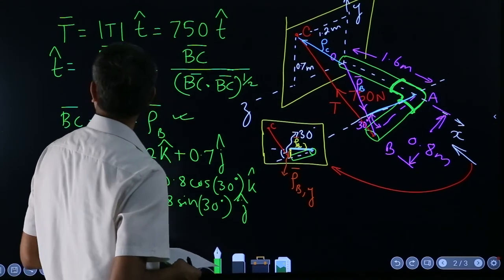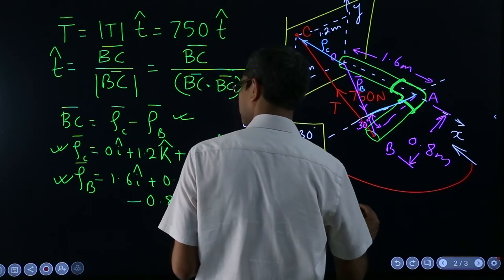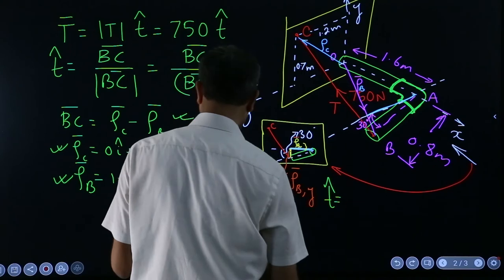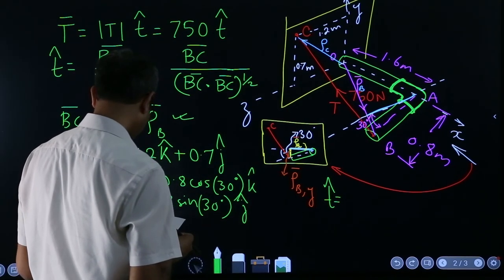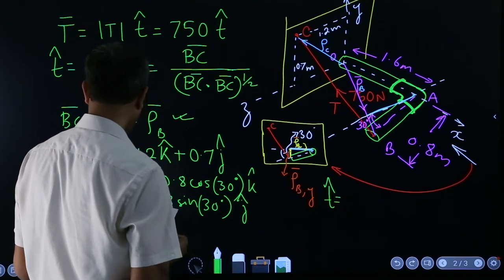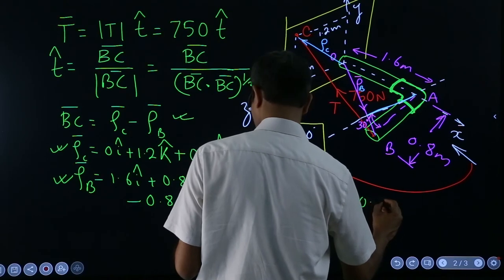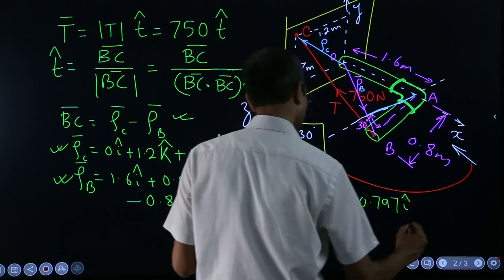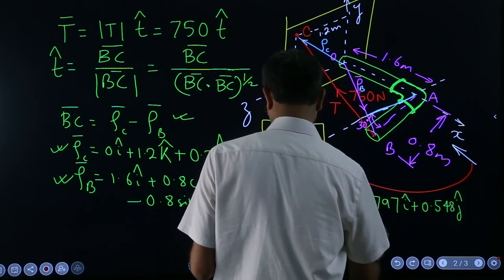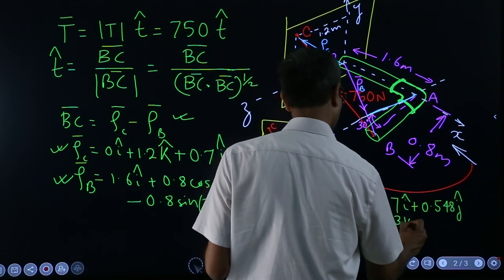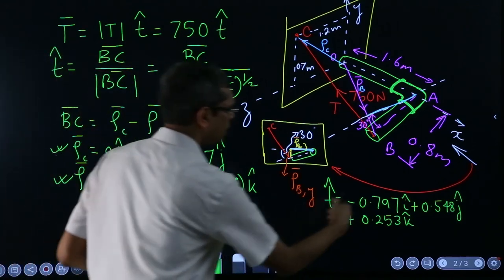If you do that, you will get t-hat as - I will write here - somehow it is minus 0.797i plus 0.548j plus 0.253k. This minus is coming because when you do ρC minus ρB, a minus sign will come here and that is how the signs are.